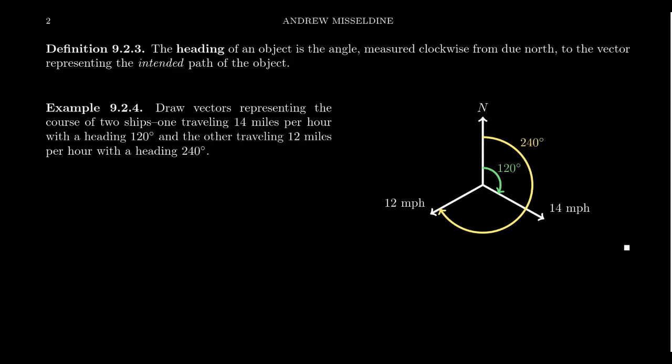When it comes to direction, there's the direction we want to travel in versus the actual direction we go in. The heading of an object is the angle representing the intended path of the object — the place that we're pointing towards. Our heading will be measured clockwise with respect to due north.